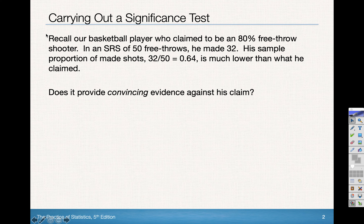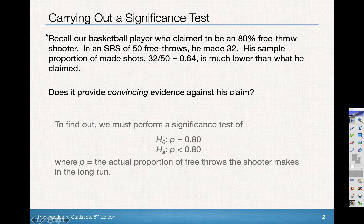We did simulations in our last section, but now we're going to actually do a full inference test. Our null hypothesis was that p equals 0.8, and the alternative was that p is less than 0.8 — that I'm no good at basketball — where p is the actual proportion of free throws that the shooter makes in the long run.